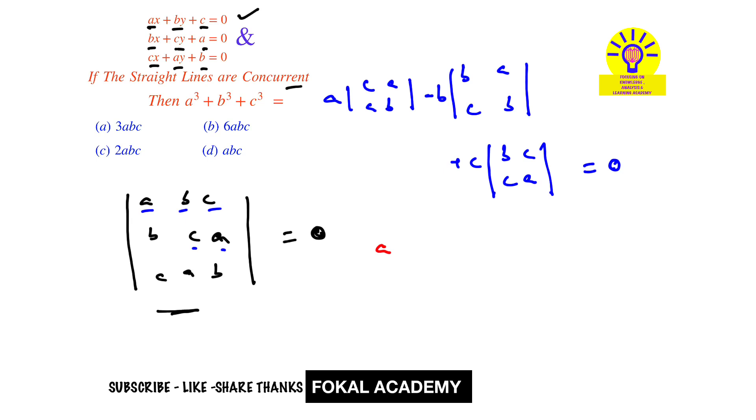So a times the determinant of this matrix is bc minus a², minus b times b² minus ac, plus c times ba minus c², that is equal to zero. Now expand these terms.